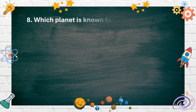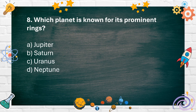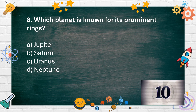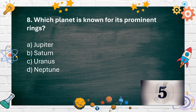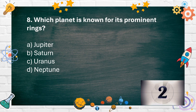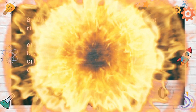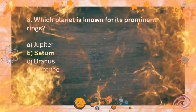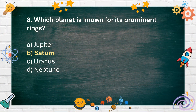Number 8. Which planet is known for its prominent rings? A. Jupiter, B. Saturn, C. Uranus, D. Neptune. The answer is B. Saturn.